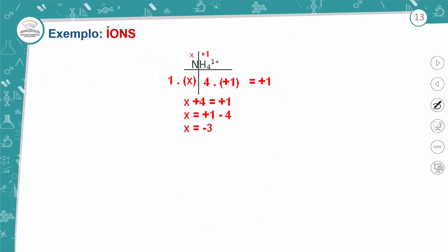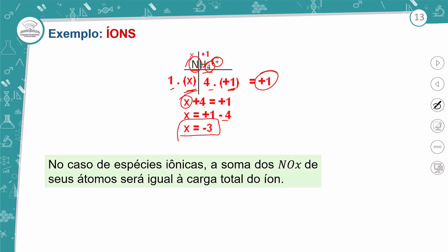Para o íon NH₄⁺, a somatória deve dar +1. O hidrogênio é +1, o nitrogênio é x. Equação: x + 4×(+1) = +1, logo x + 4 = +1, então x = +1 − 4 = −3. O NOX do nitrogênio no NH₄⁺ é −3.